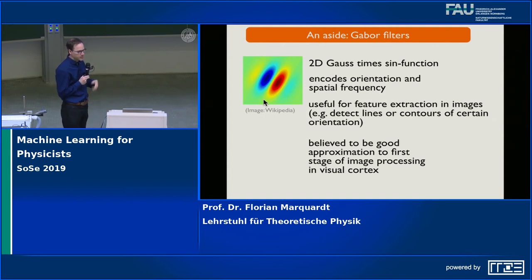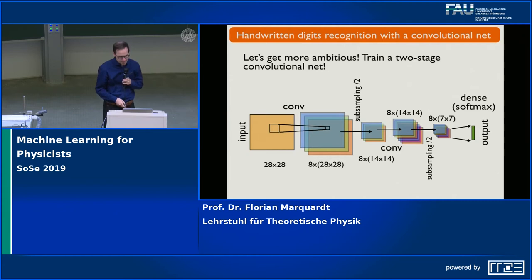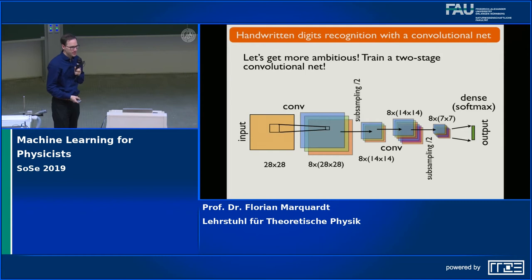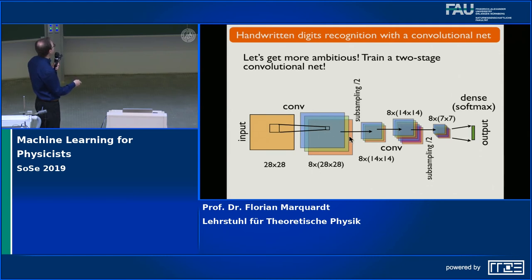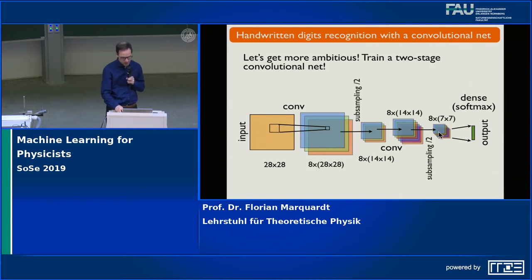These Gabor filters are generally useful for feature extraction in images — you learn where the boundaries are and even how they are oriented. They are even believed to be a good approximation for the first stages of what goes on when you look at an image. Now we can play around and try to make more progress by making the network more complicated: more channels, less aggressive resolution reduction in a first step, and further network layers. You would think this neural network should become more powerful.